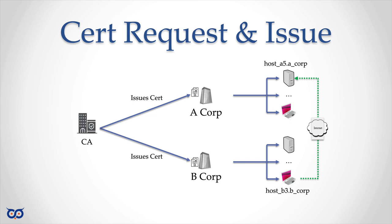Host B3 can go up the chain: who signed Host A5's certificate? Corp A. Who signed Corp A's certificate? The CA. And I trust that CA. This introduces the term root CA — as you go back up the chain, you eventually reach the root, which has no further signer. You could have two different root CAs — CA1 for Corp A and CA2 for Corp B — and they can still establish trust. You only need to populate trusted root CAs, and the system can traverse the chain upward automatically.